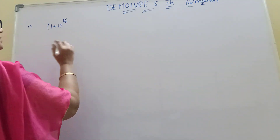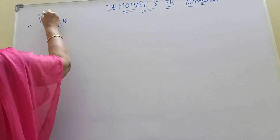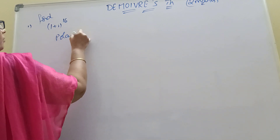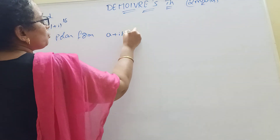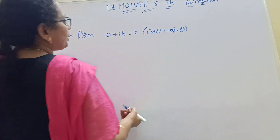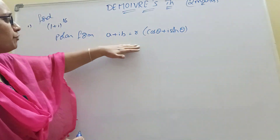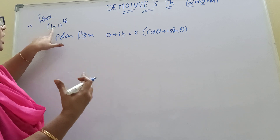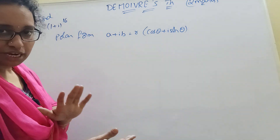Now come to the point. Find the value of (1 + i) to some power. First, polar form — what is the polar form? a + ib equal to r of (cos theta + i sine theta). A is the real part, b is the imaginary part — the coefficient of i is b.